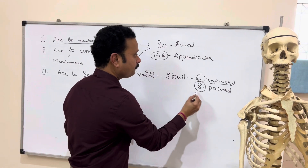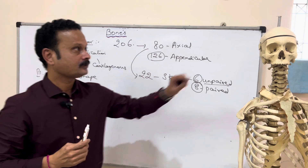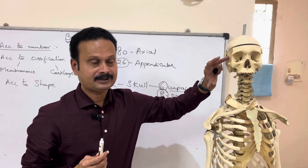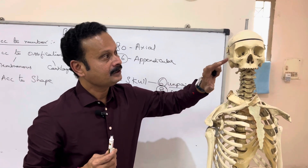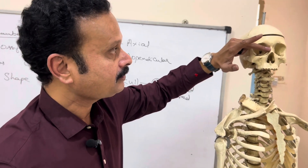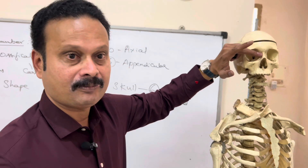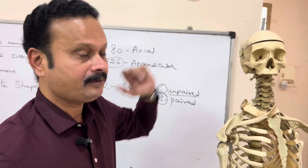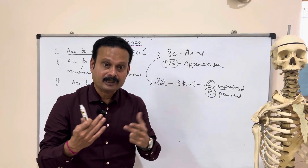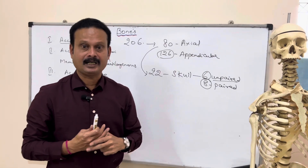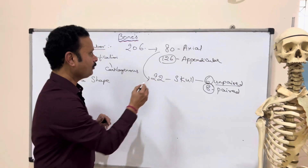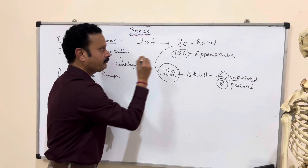The 8 paired bones are: parietal bones, temporal bones, zygomatic bones, nasal bones, lacrimal bones, palatine bones, inferior nasal conchae, and maxilla. All these are the paired bones of the skull, overall making it 22 bones.